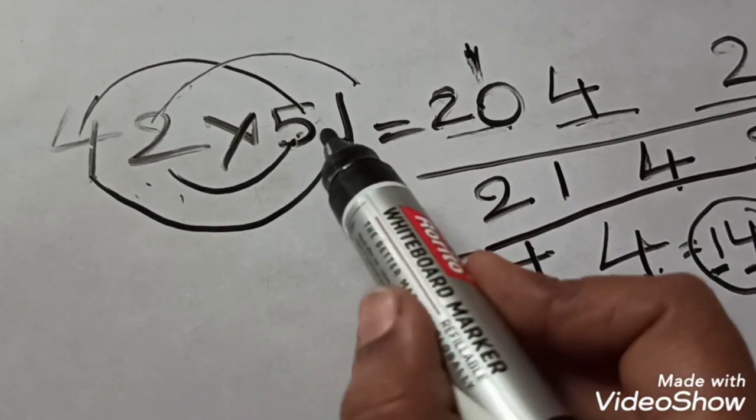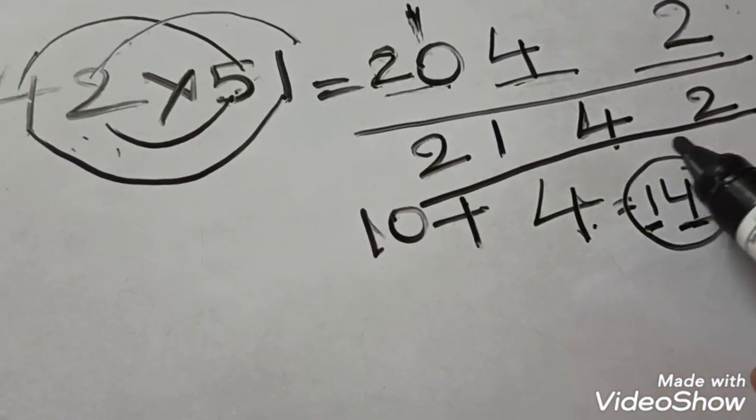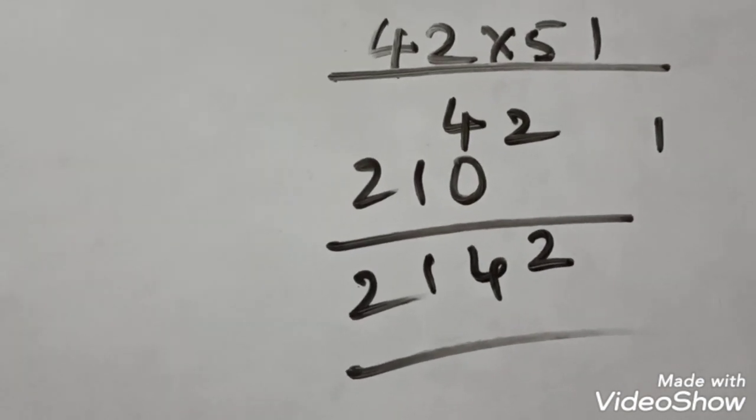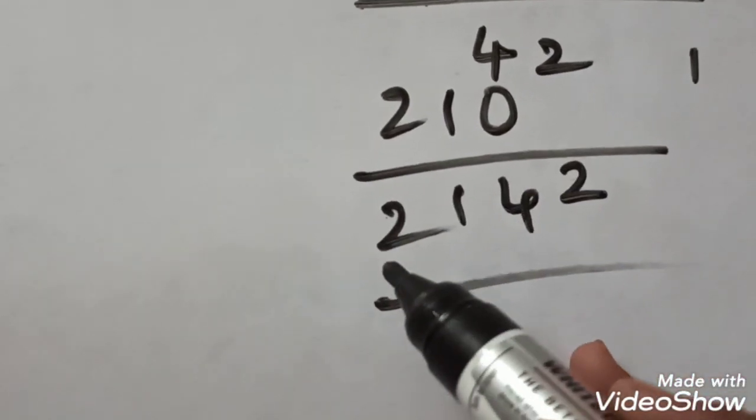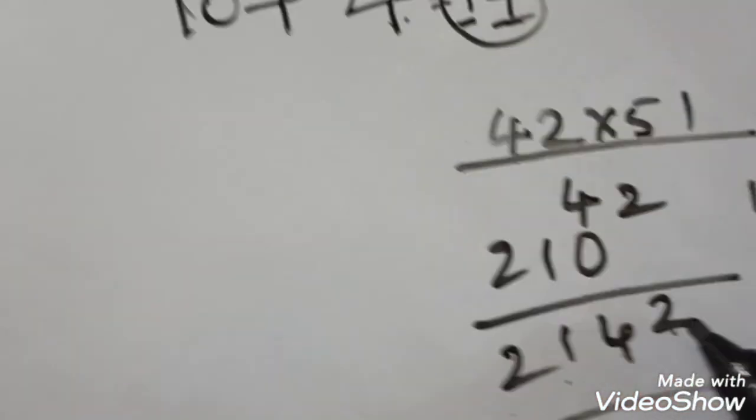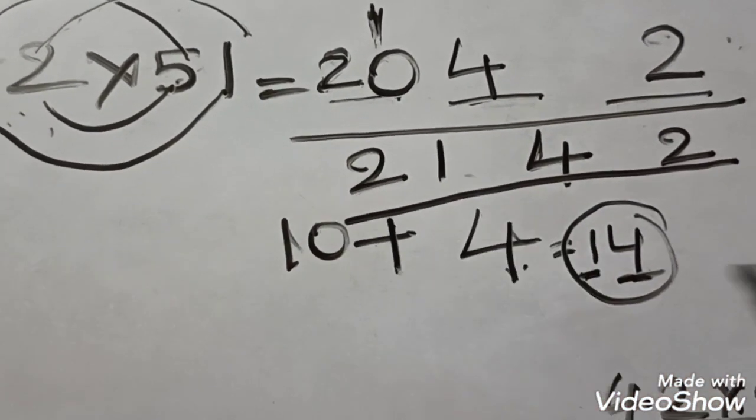42 into 51, the answer is 2142. If we do this problem in normal multiplication, we will get the same answer, 2142. In the easy method, we can do it by following these steps.